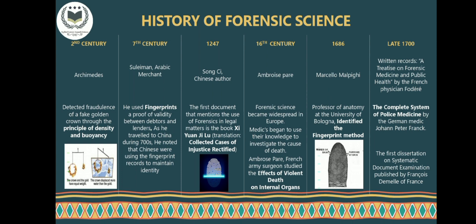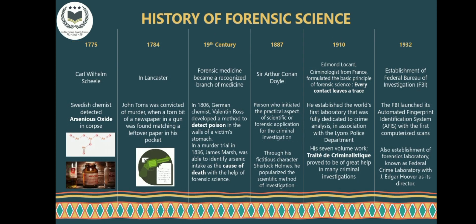In the 18th century, many scholars did ground-breaking work in the forensic field. In the year 1775, Carl detected arsenic oxide in a corpse. In the year 1784, John Toms was convicted of murder by matching a newspaper from his pocket to a gun. In the year 1806, Valentin and Rose detected poison in a victim's stomach wall. In the year 1836, English chemist James Marsh developed a chemical process to confirm arsenic as a cause of death.